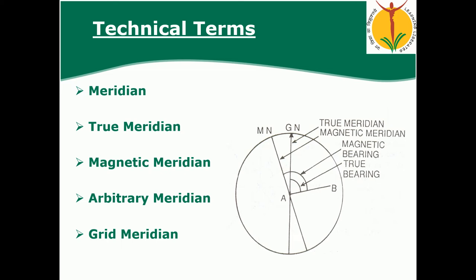First we have to see the various technical terms in theodolite. These terms are similar to those in the prismatic compass. The first term is meridian — meridian is nothing but a direction, and along with the direction we measure angles. The angle measured is called a bearing.